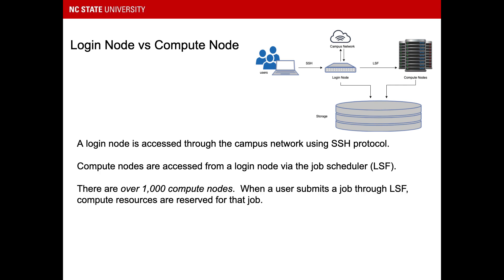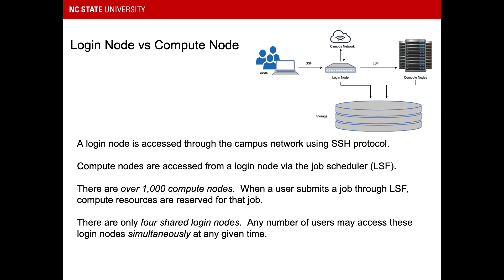There are over a thousand compute nodes. When a user submits a job through LSF, compute resources are reserved for that job. In contrast, there are only four shared login nodes, and any number of users may access these login nodes simultaneously. Do you ever notice that your laptop runs slow when too many apps are running in the background, or how slow a file transfer goes when you try to do several at once? Now try to imagine a dozen users doing that all at once, all on the same computer.